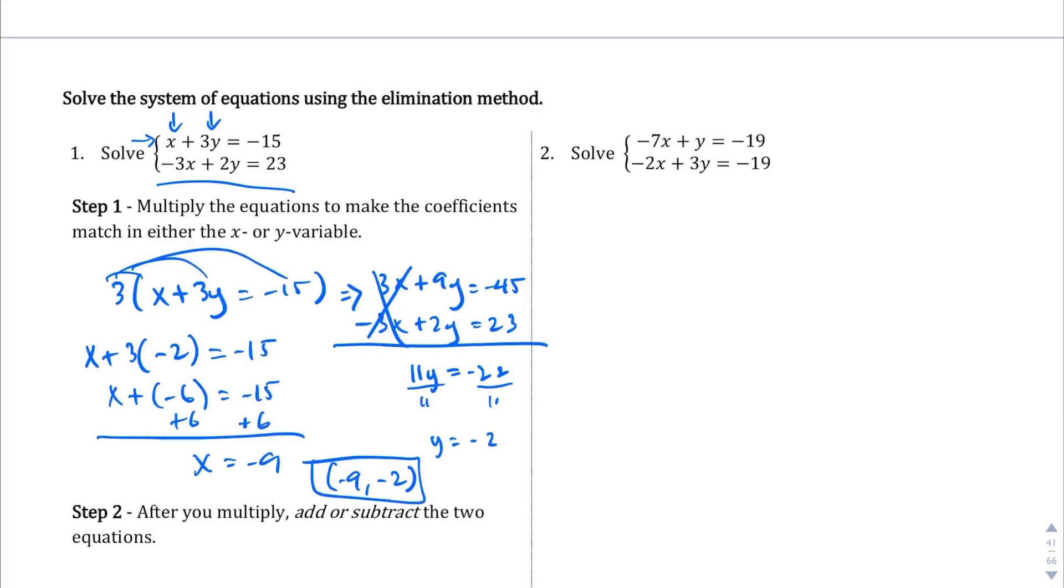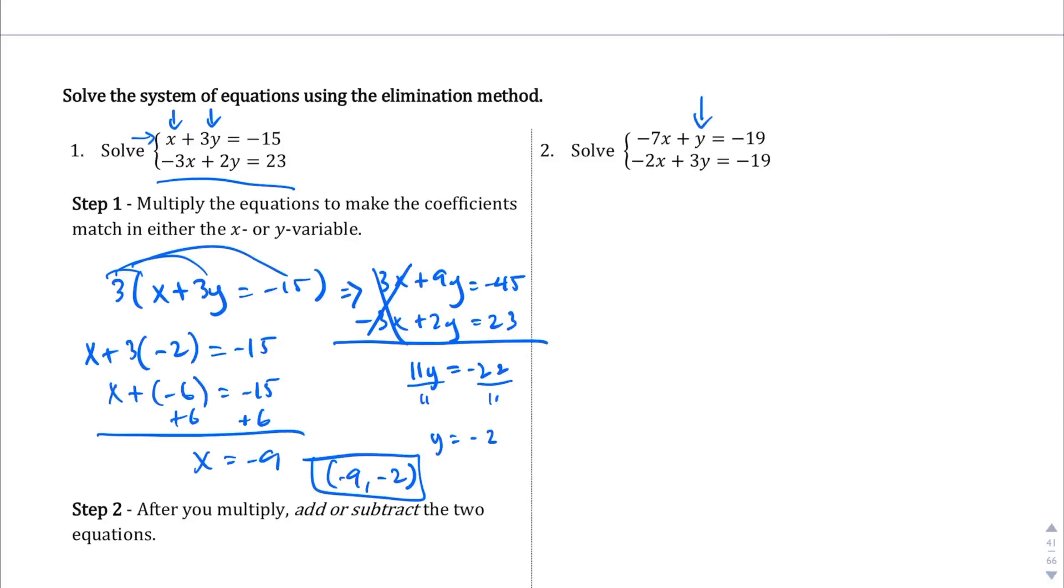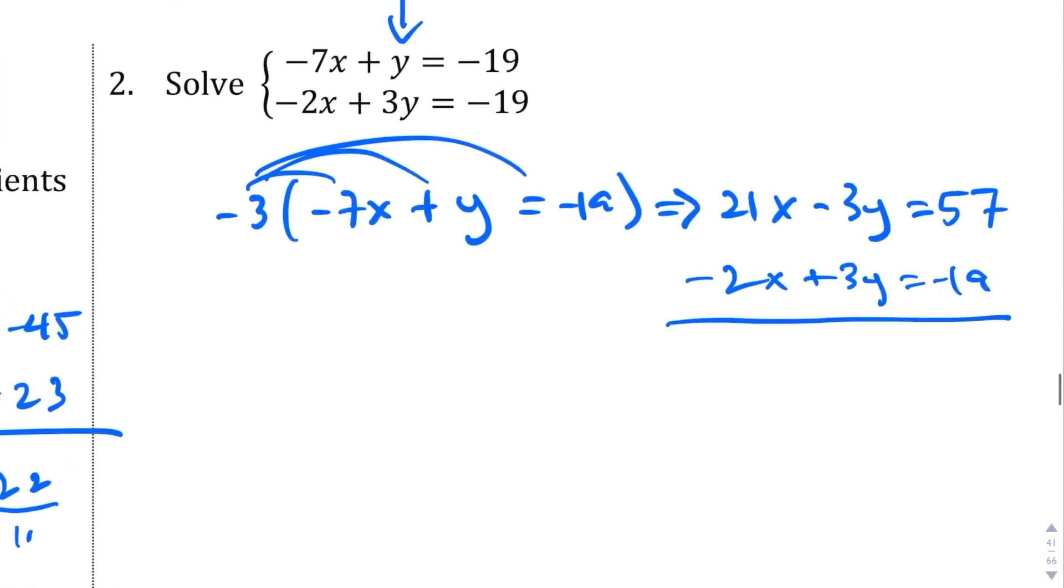Okay, we're going to solve question number 2. So in this case, I think I'm going to go with changing the y's again, because all I have to do is multiply by 3 to get a common coefficient. Or actually, I'm going to multiply by negative 3, and you'll see why in a second. So if I multiply by negative 3, and this is the equation on the top, what I end up with, if I distribute that, is 21x minus 3y equals, what is 19 times 3? 57. Positive 57 since they're both negative. And then negative 2x plus 3y equals negative 19.